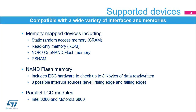Three interrupt sources can be configured to generate an interrupt when a rising edge, falling edge, or high level is detected on the NAND Flash ready/busy signal. Furthermore, the FMC interfaces with parallel LCD modules supporting the Intel 8080 and Motorola 6800 modes and is flexible enough to adapt to various LCD interfaces.